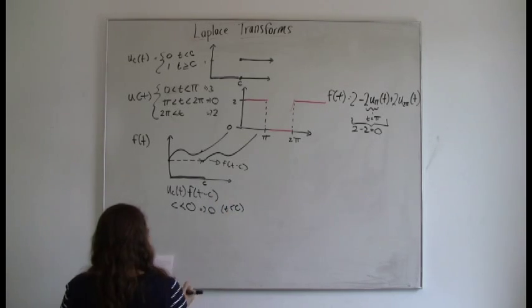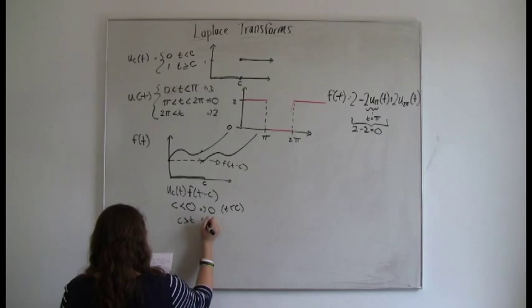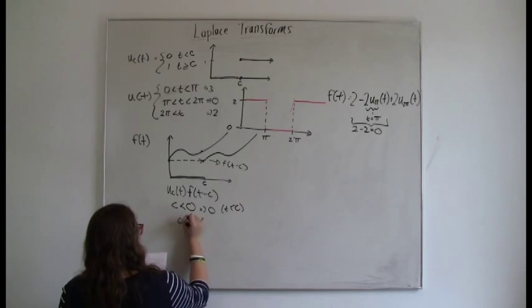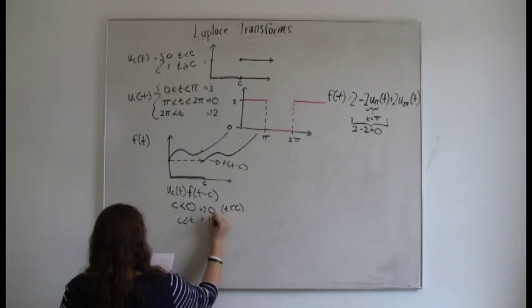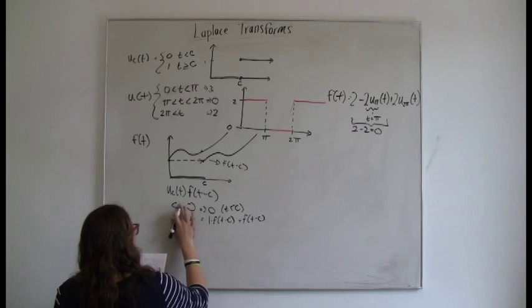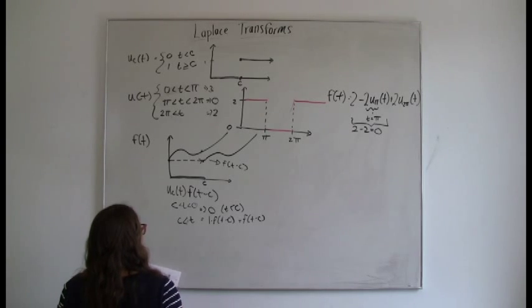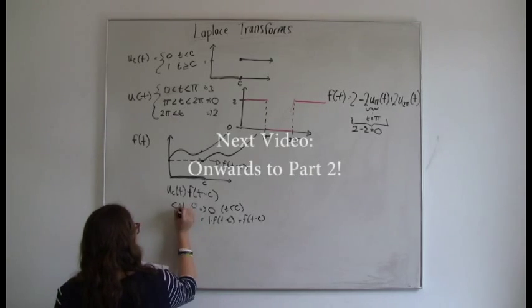Then, once we reach c, and from every point on, the unit step function jumps to 1, because at c, it jumps to 1. So then you just are left with the function of t minus c. And that's perfect, that's what we want, because then at that point the polynomial takes over. So now, let's look at the Laplace transform of this function.